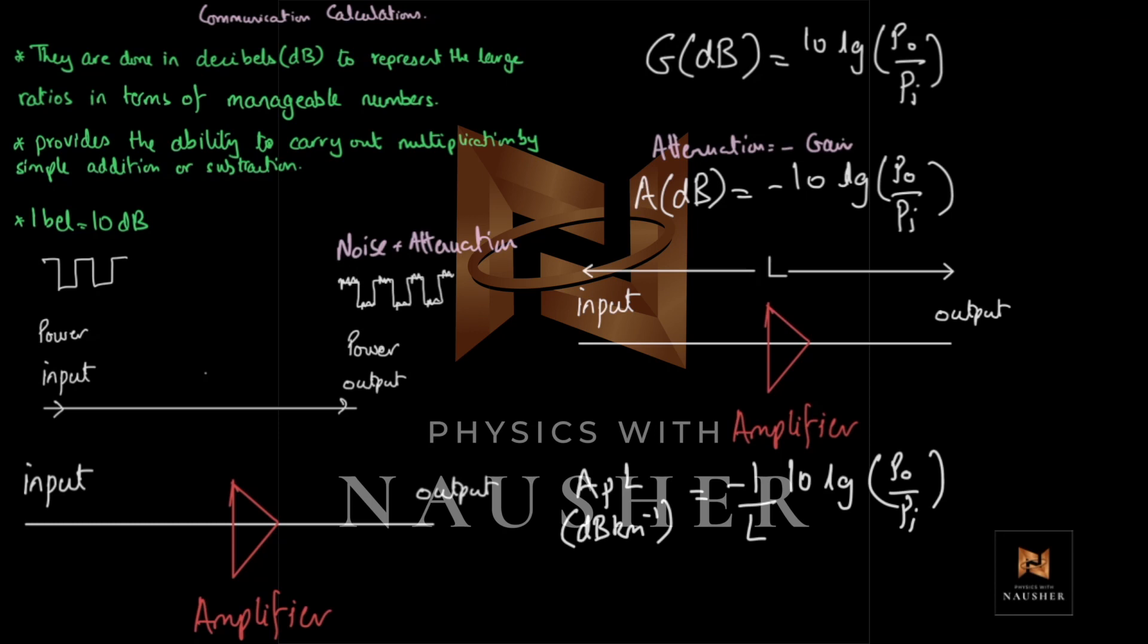And the formula will be the same formula as before divided by length. So, when you divide both sides by length, the right side and the left side, then this thing is called APL which is attenuation per unit length. And on the right side, you will just have 1 over L and the whole formula as it is. So, you will get attenuation per unit length.